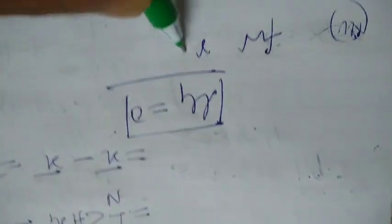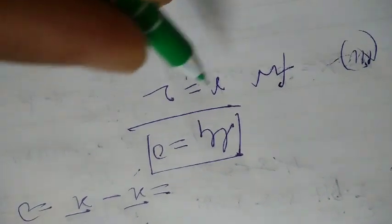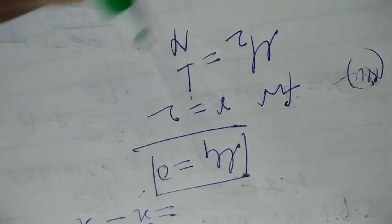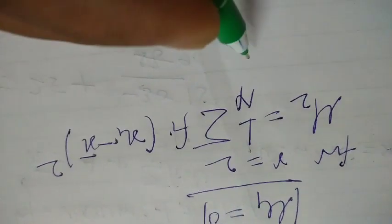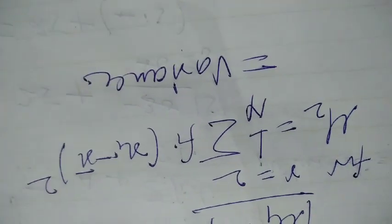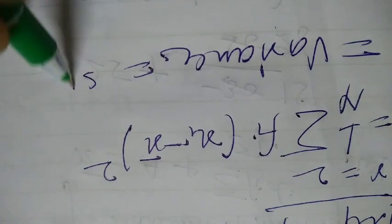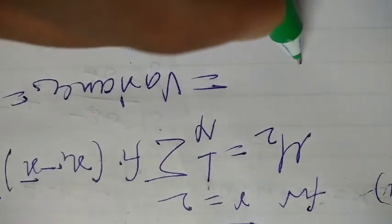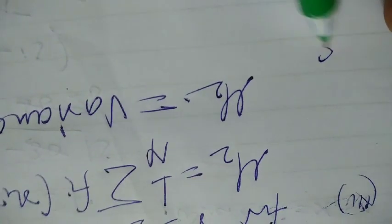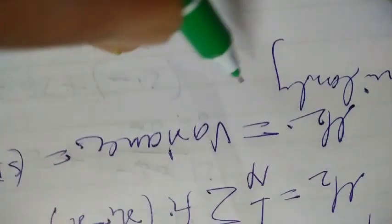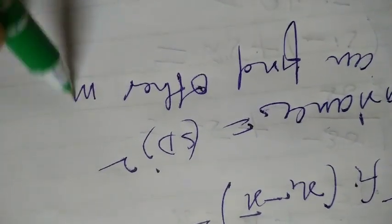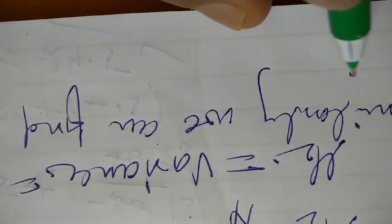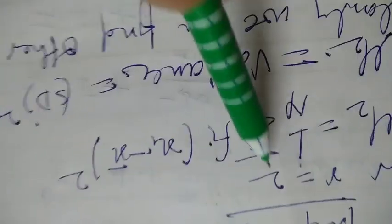Now the third case: for r is equal to 2, this becomes mu 2 equal to 1 upon n summation Fi (Xi minus X bar) squared. This moment mu 2 is said to be very important: variance. Variance is equal to standard deviation whole square. It is very very important. Similarly, we can find other moments by putting r equal to 3, 4, and so on.